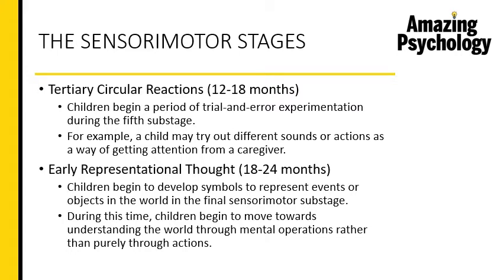In the final sub-stage — early representational thought, from 18 to 24 months — the child begins to develop symbols to represent events or objects in the world. During this phase, the child starts getting a broader understanding of the world using mental faculties rather than purely through actions. This is the stage where the child starts thinking, sees an action, understands what's happening, processes the information, and produces new behaviors rather than just an instinctive reaction. So these are the different stages a child goes through, and there's one more thing to look at.